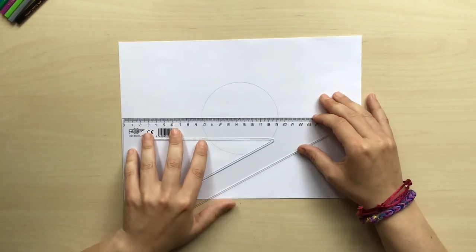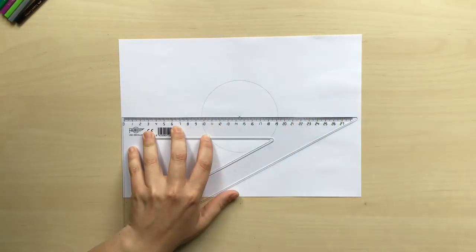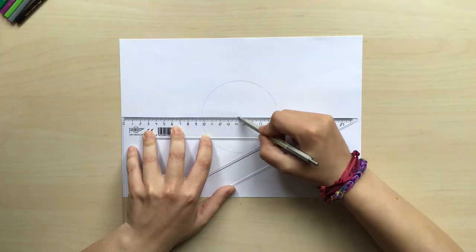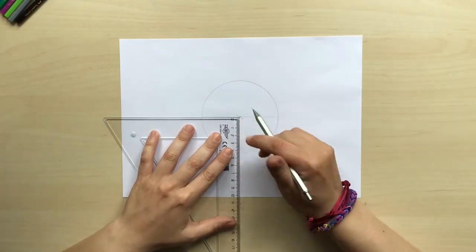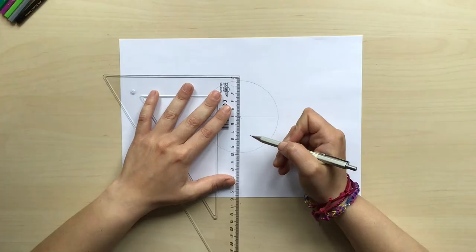Afterwards we are going to trace two perpendicular diameters. I'm going to use the square set because it has a 90 degree angle and that's going to make it much easier for them to be perpendicular.